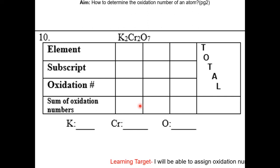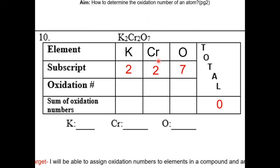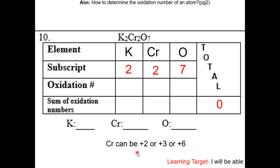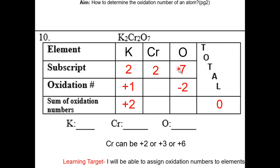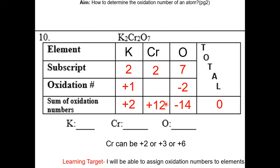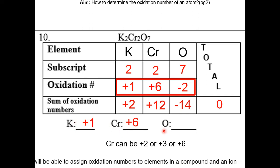Let's look at a more difficult example — a compound with three elements. The sum of oxidation numbers will be zero. Potassium has a subscript of two, chromium has a subscript of two, and oxygen has a subscript of seven. Since chromium has multiple possible oxidation states, we work on it last. Potassium is a group one element, so its oxidation number is +1; with two atoms, the sum is +2. Oxygen is −2; with seven atoms, the sum is −14. Therefore the sum for chromium must be +12, and since there are two chromiums, each is +6. So potassium is +1, chromium is +6, and oxygen is −2.